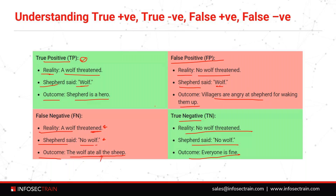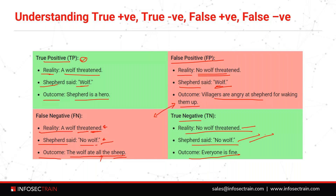In false positive, no danger was there but Shefford said danger — outcome is everyone is angry, and it won't have that much of an impact. But in false negative, danger was there, Shefford said no danger — outcome is all the sheep are gone. Huge impact. True negative: there was no wolf, Shefford also said no wolf, no danger — everything is fine and the villagers are sleeping and relaxing.